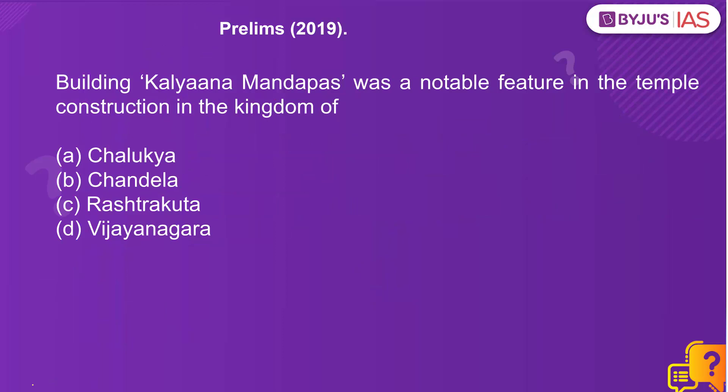Now let's look at a previous year's question from Prelims 2019: building Kalyana Mandapas was a notable feature in the temple construction in the kingdom of Vijayanagara. D is the right answer.